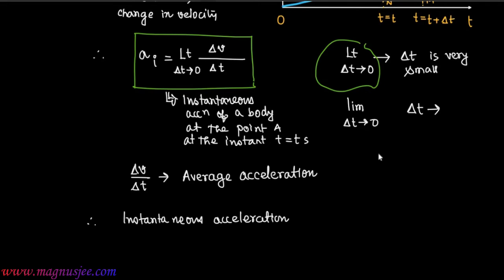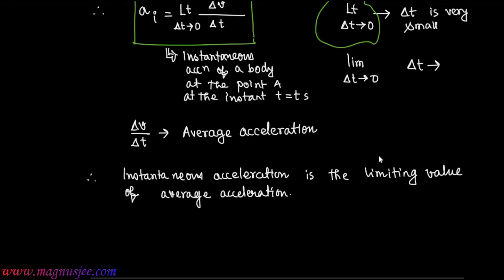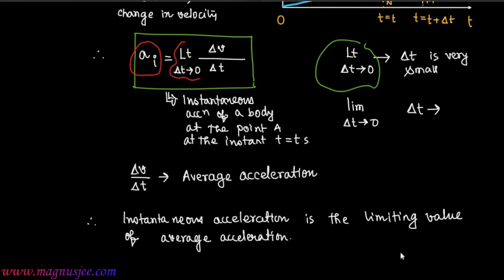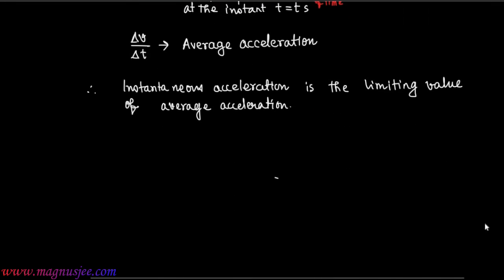We can say that instantaneous acceleration is the limiting value of average acceleration in the interval of time delta t. Instantaneous acceleration is the limiting value of average acceleration of the body. Therefore, aᵢ is the limiting value of delta v by delta t, where delta v by delta t is the average acceleration. The condition limit delta t tends to zero indicates that we are considering the limiting value over a very small interval of time.